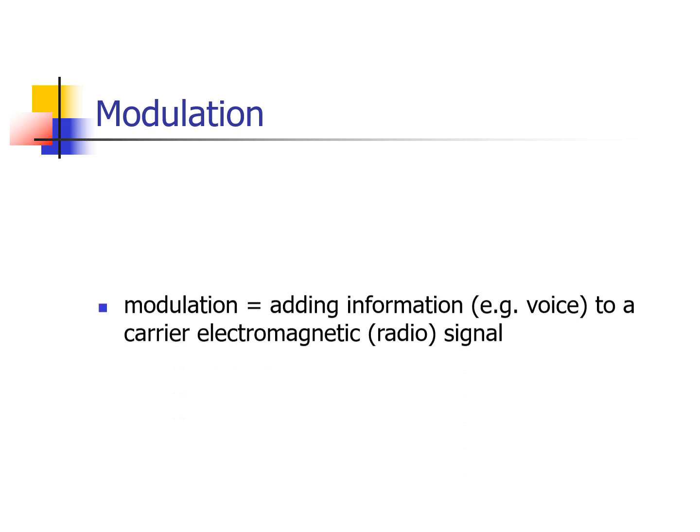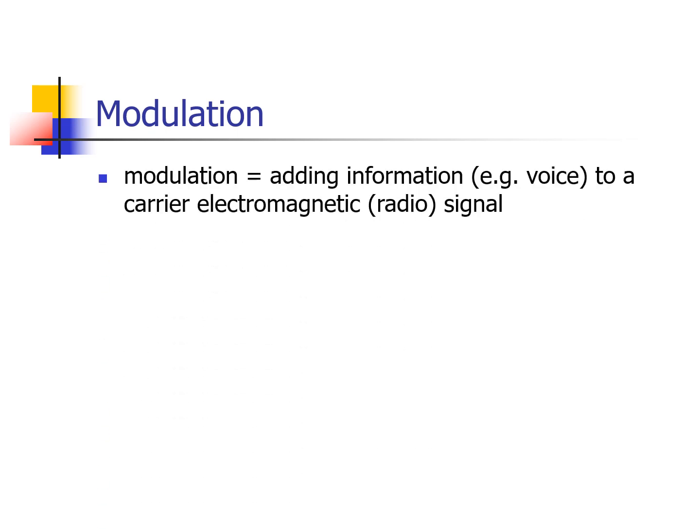In order for the information to reach the receiver, it should be protected from obstructions. So the information is packed using a carrier EM wave, and this process is called modulation. Modulation is the process of adding information, like voice, to a carrier electromagnetic radio signal.